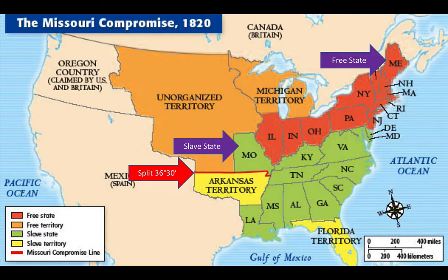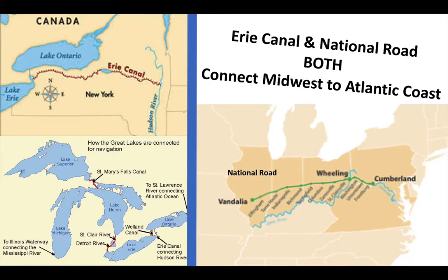The last thing we need to talk about is the effect of the Erie Canal in New York and the National Road. Both the Erie Canal and the National Road are built to connect the Midwest slash Ohio River Valley area to the Atlantic coast, which is on the east side of the United States. And with that, you are done with this video.